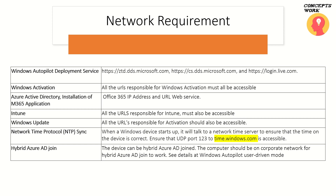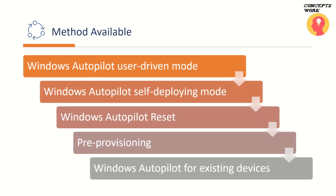The available Windows Autopilot deployment methods are: User Driven Mode (as just discussed); Self Deploying Mode, where a local account is created on the machine and a different configuration set is used before handing it to users; and Autopilot Reset, where a machine can be reset by the user or the IT team and handed to a different user — upon the new user's login, all scoped policies for configuration, compliance, and app deployment are applied.